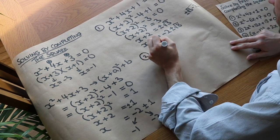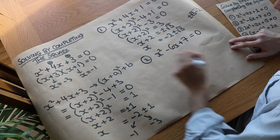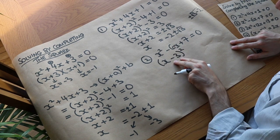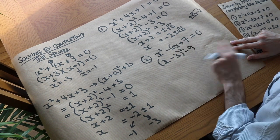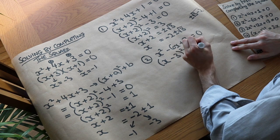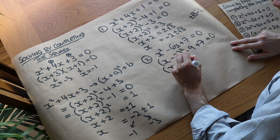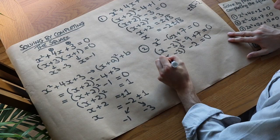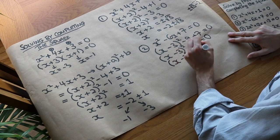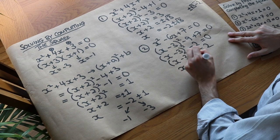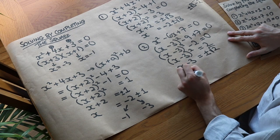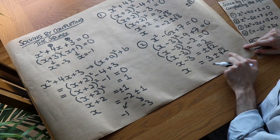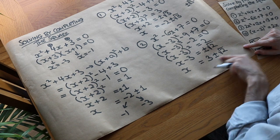Next example: x squared minus 6x plus 7 equals 0. We complete the square — half of minus 6 is minus 3, so x minus 3 squared, then square that number and subtract it: minus 3 squared is 9, so subtract 9. We've still got the plus 7, so minus 9 plus 7 is minus 2. We add 2 to both sides, then square root to get x minus 3 equals plus or minus root 2. Adding 3 to both sides gives x equals 3 plus or minus root 2, which gives solutions 3 plus root 2 and 3 minus root 2.